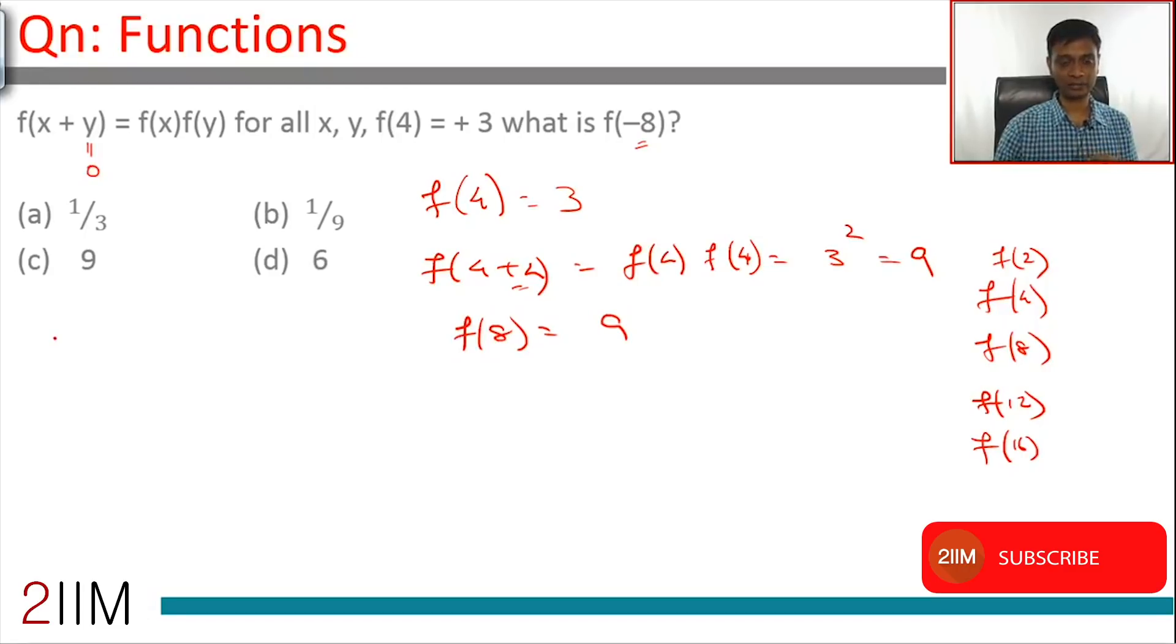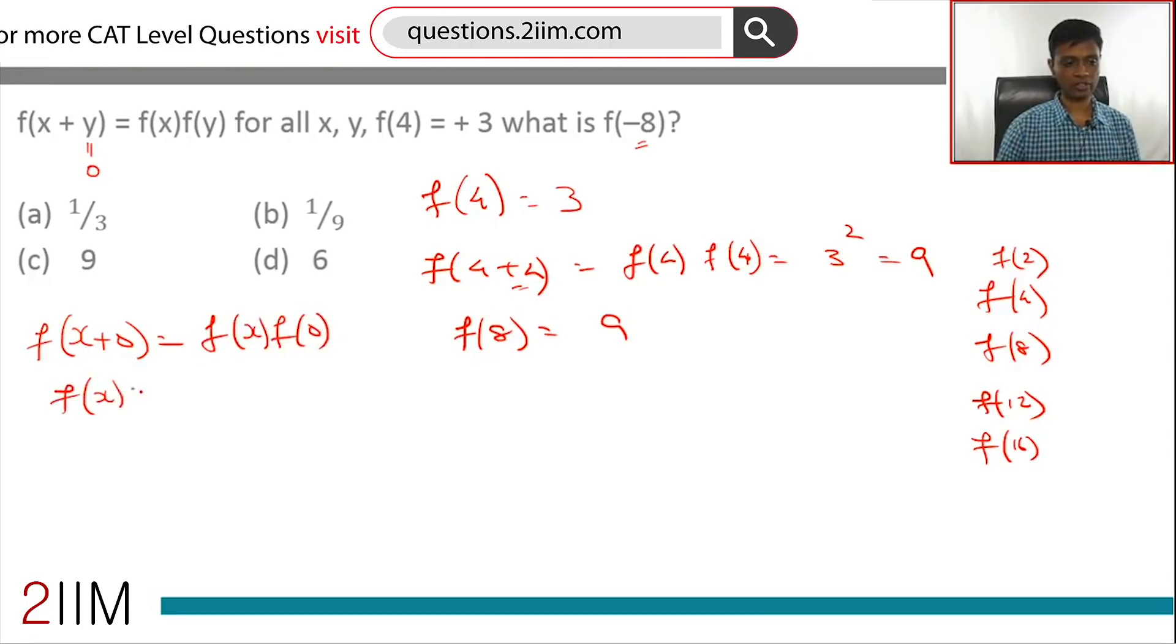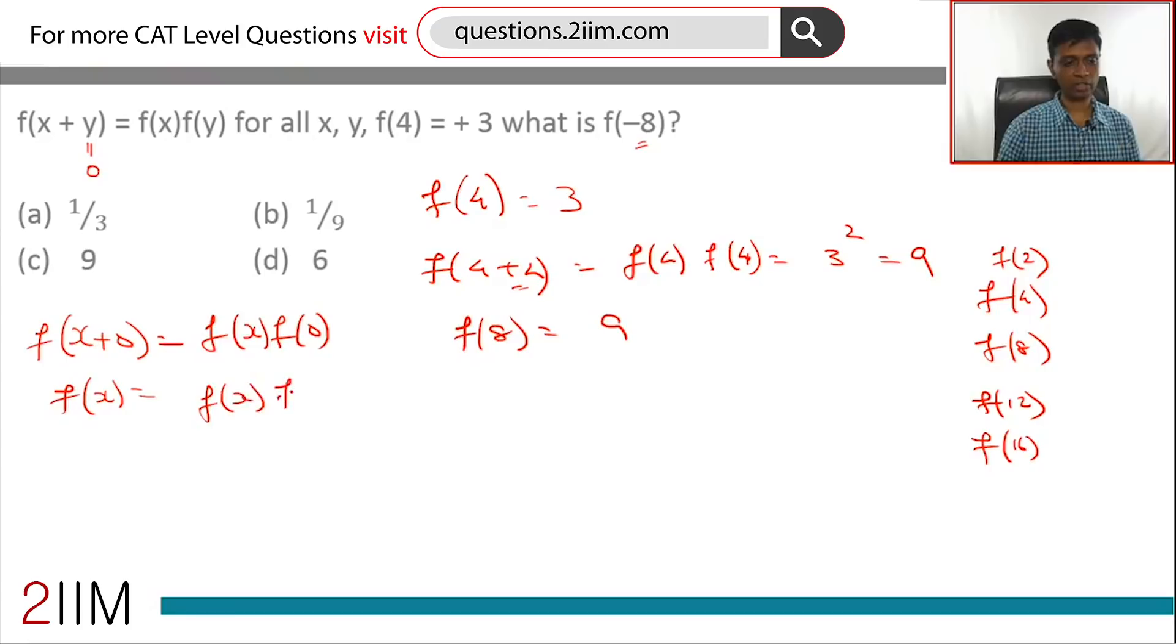0 is what is called as the additive identity. Any number plus 0 is the same number. You can add 0 to a number and it will stay as is. This tells us if we put y as 0, f of x plus 0 is f of x into f of 0, or f of x is f of x into f of 0, or f of 0 is 1, assuming f of x is not 0. That we know because f of 4 is plus 3. So f of 0 is 1, this we have found.